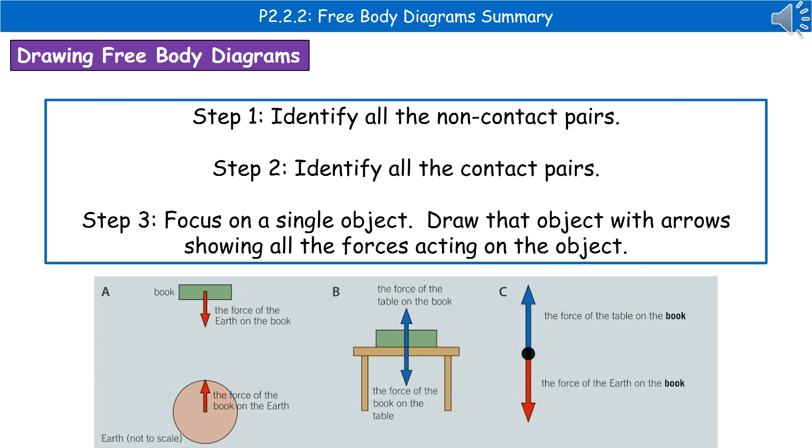The upward arrow we've drawn is the force of the table on the book. And the downward arrow is the force of the earth on the book. The other two are acting on other things, so we're not concerned with them.